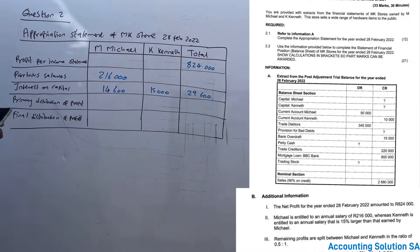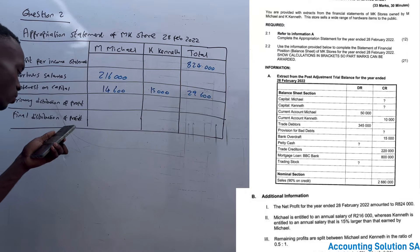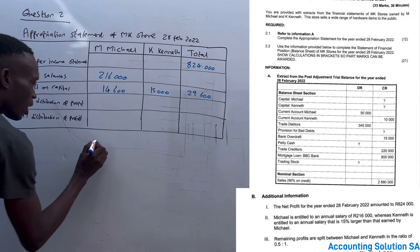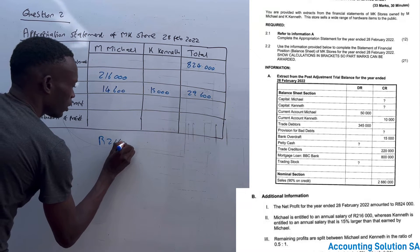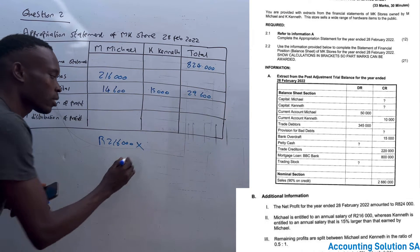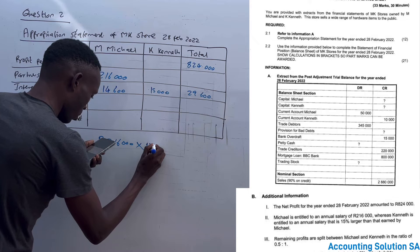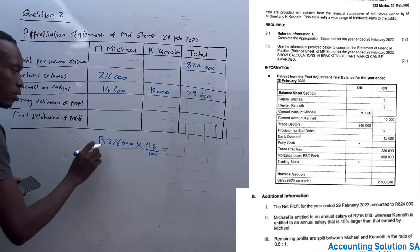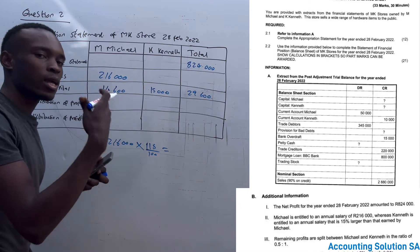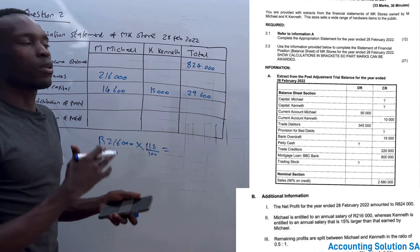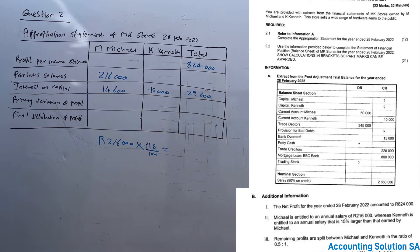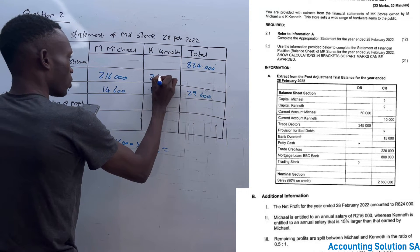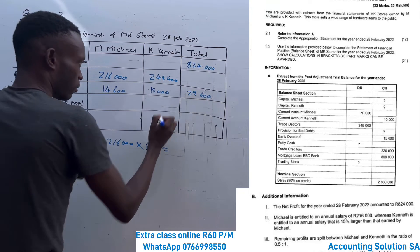For Kenneth, they said he is entitled to an annual salary that is 15% larger than Mitchell's, which means we take R216,000 and increase it by 15%. You can either say 115 over 100 multiplied by 216,000, or you say 216,000 times 15% and add it back. Both formulas give the same answer. Once you've done this calculation, you get an amount of R248,400.